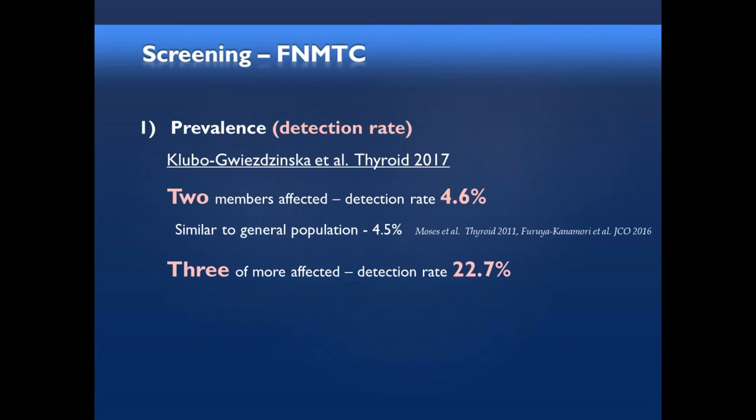However, if you have three or more affected patients in a family, it's a different story. You have a 22% chance of finding thyroid cancer. One in five will demonstrate a thyroid cancer that was unsuspected. That's a huge number.